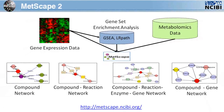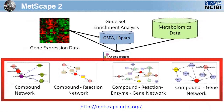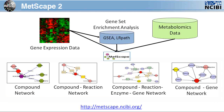The bottom portion of this slide shows the various types of networks you can build with the Metscape plugin. You can build a compound network, a compound reaction network, a compound reaction enzyme gene network, or a compound gene network.